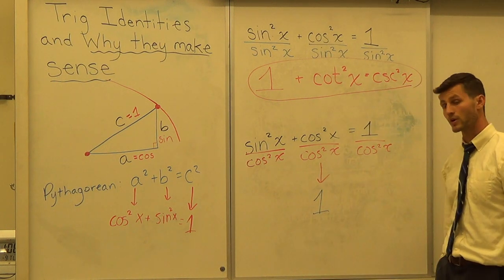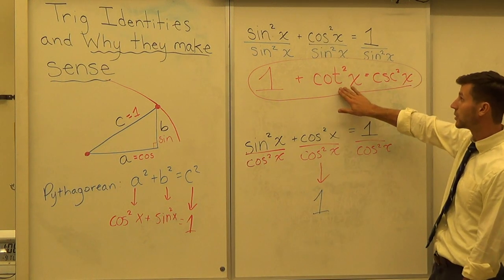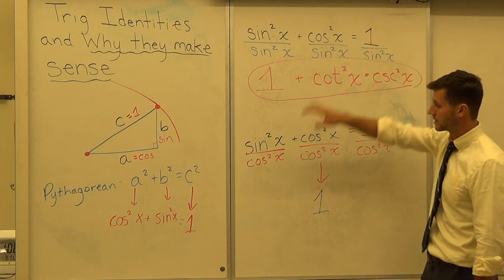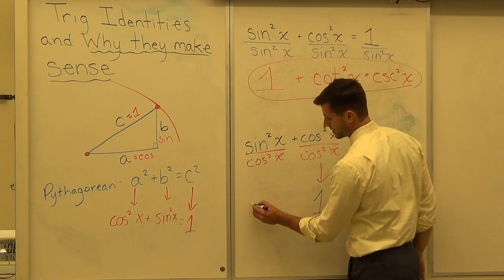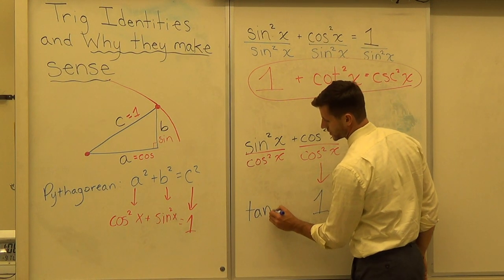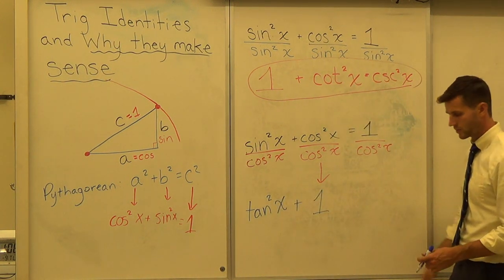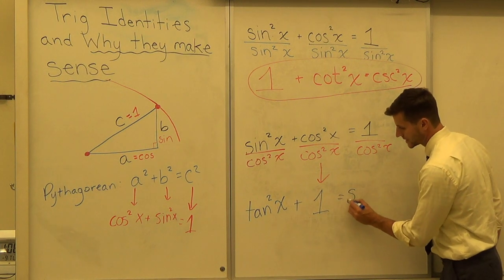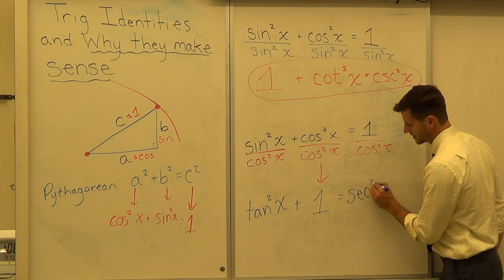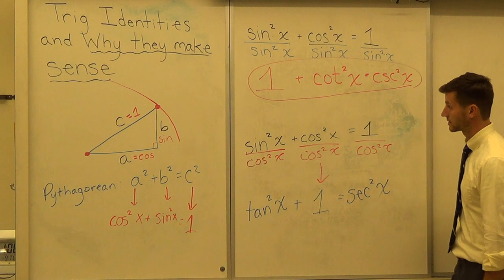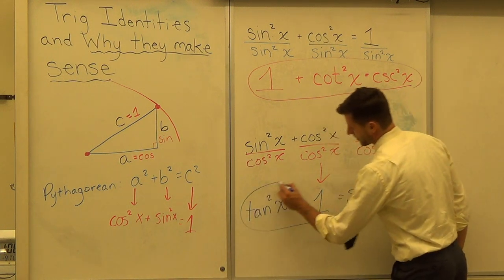Sine squared X over cosine squared X. It's not cotangent because that was the opposite. This time it's tangent squared X. And what is one over cosine squared X? How do we write that? We write it as the secant, s-e-c squared of X. And there's your third formula.